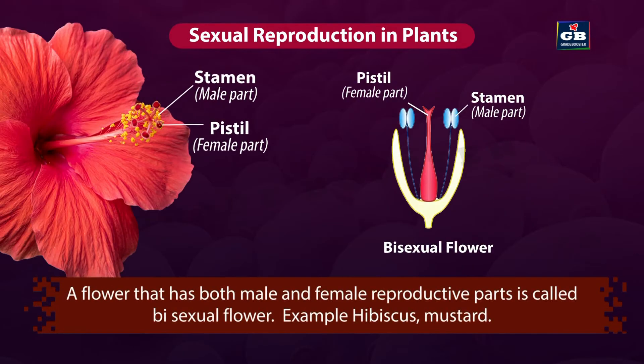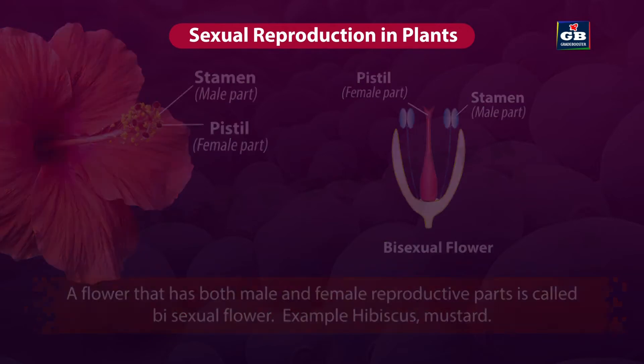A flower that has both male and female reproductive parts is called a bisexual flower. Examples: hibiscus and mustard.